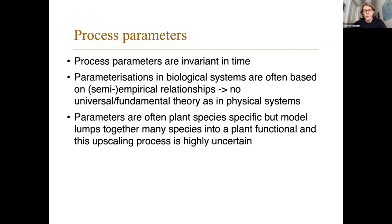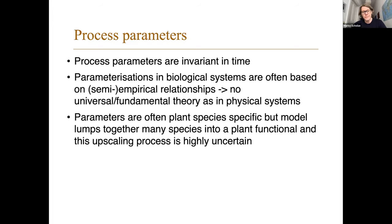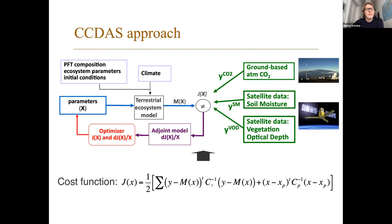A few words on these process parameters - that's essentially the control vector in our assimilation system. Process parameters are invariant in time and are used in parameterizations in biological systems, which are often based on empirical or semi-empirical relationships. This is a bit different from physical systems where we have fundamental theory with fixed parameter values. On top of that, parameters are often plant species specific, but in the model we cannot simulate every single plant species - we lump them together into plant functional types, upscaling those parameter values. The upscaling process is, of course, uncertain. So we have uncertain parameters derived by empirical relationships, which is what we try to optimize in our CCDAS approach.